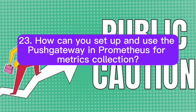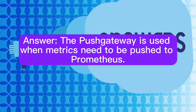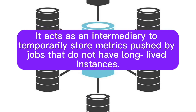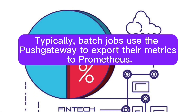How can you set up and use the push gateway in Prometheus for metrics collection? The push gateway is used when metrics need to be pushed to Prometheus. It acts as an intermediary to temporarily store metrics pushed by jobs that do not have long-lived instances. Typically, batch jobs use the push gateway to export their metrics to Prometheus.